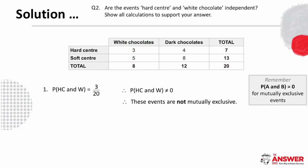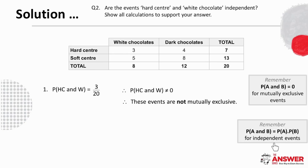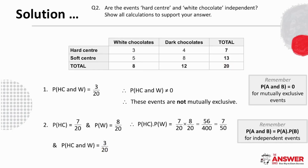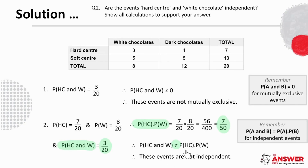For question 2, we remember that for independent events, P(A and B) equals P(A) times P(B). So we find the probability of hard centre, which is 7 over 20, and the probability of white chocolate, which is 8 over 20. The product of these two simplifies to 7 over 50. Then using the table, the probability of hard centre and white chocolate is 3 over 20. We can therefore conclude that these events are not independent because these two values are not equal.